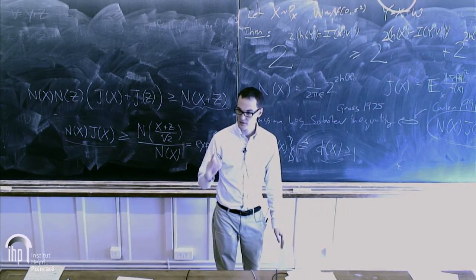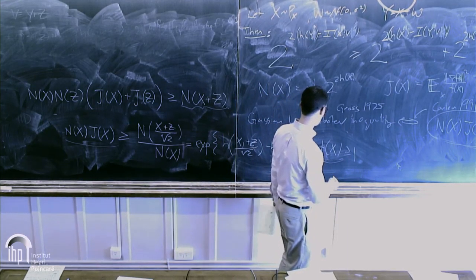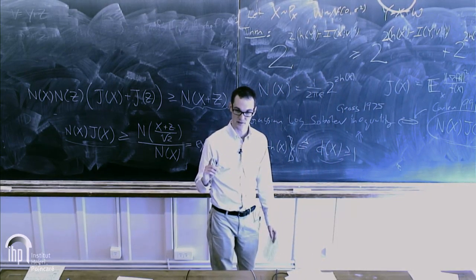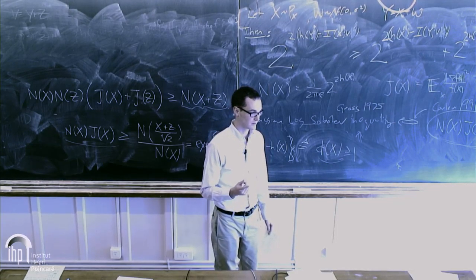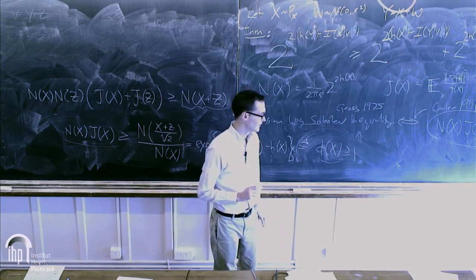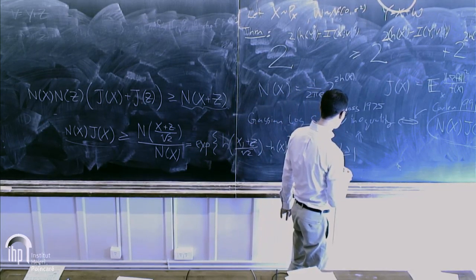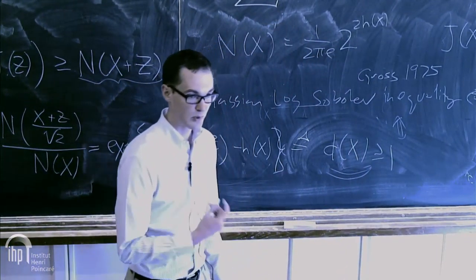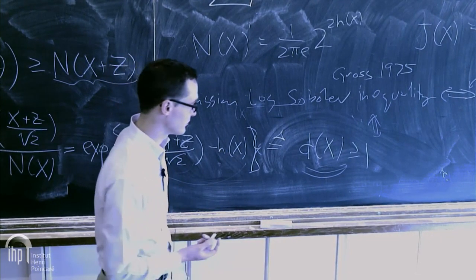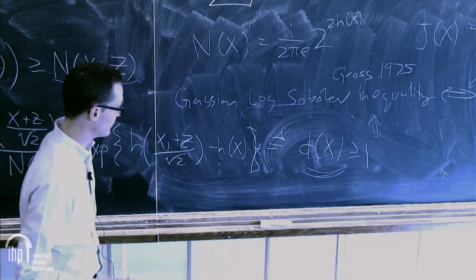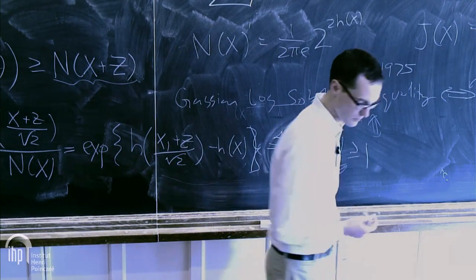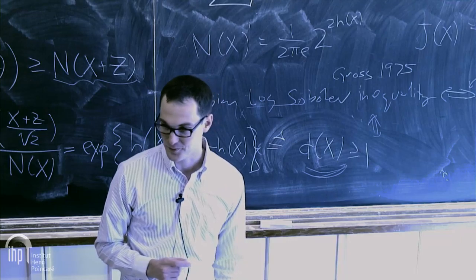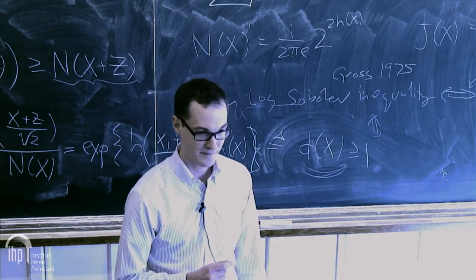The punchline: in network information theory and information theory generally, instead of following the black art of 'single-letterizing' a region, we should identify the equivalent functional inequality underlying the problem. There's a duality between information measures to exploit. Also: Gaussian log-Sobolev inequality is equivalent to hypercontractivity, which is heavily used in TCS mostly on the hypercube. So this framework can sharpen hypercontractive estimates, at least for the Ornstein-Uhlenbeck semigroup.